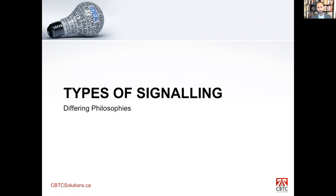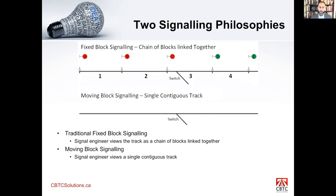Now we go into types of signaling — fixed block and moving block. A conventional signal engineer sees the track as a chain of blocks linked together with signals indicating when a train can move. A CBTC engineer, by contrast, sees a single contiguous, continuous, unbroken track all the way along the line. That is the biggest difference between the two types of signaling — how each engineer views the track — and they are very different.